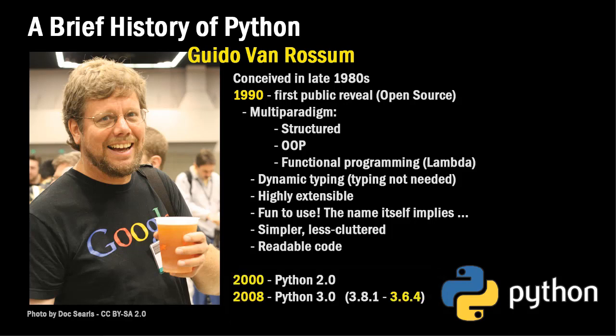In 2000, Python 2.0 was released, and in 2008 Python 3.0 was released. Python 2 is still around; however, it is being discontinued in April 2020, with no further updates or support for it, nor support for anything less than Python 3.5. In our classroom we're using 3.6.4. The most recent version as of creating this video is Python 3.8.1, but it really won't make a lot of difference which version you use.